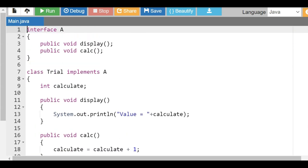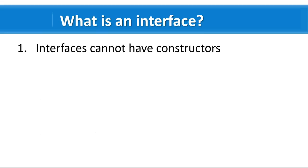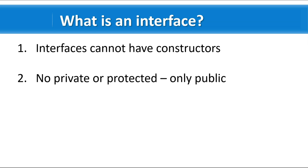We saw why an interface is required in Java, how it differs from an abstract class, and how to implement it. Now let's cover some key points about an interface. Interfaces cannot have constructors — this is obvious because you cannot create an object of the type interface; you cannot instantiate an interface, so naturally you cannot have constructors within it.